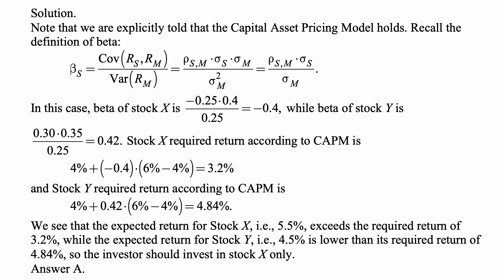Here is the solution. We are explicitly told that the capital asset pricing model holds. Recall the definition of beta: beta is defined as the covariance of the return of a security with the return of the market, divided by the variance of the market return. This equals the correlation coefficient of S and the market times sigma_S times sigma_M, divided by sigma_M squared — which simplifies to rho_SM times sigma_S over sigma_M.